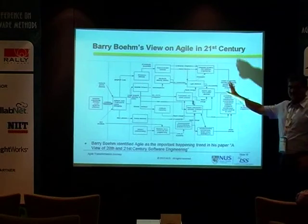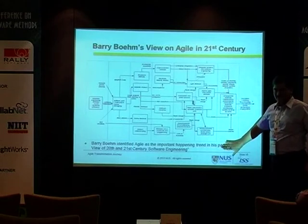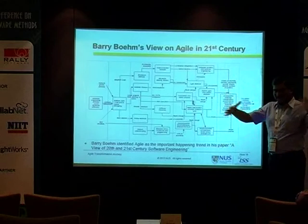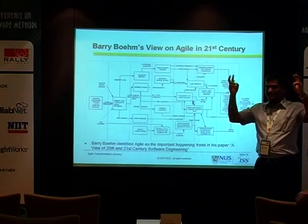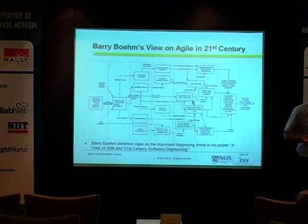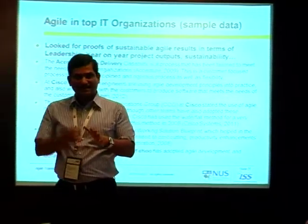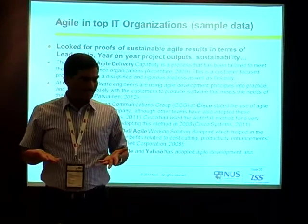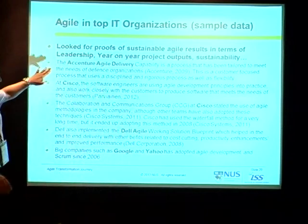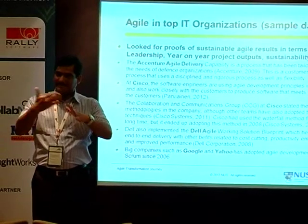We also consulted Barry Boehm, who in his work on 21st-century software engineering trends said Agile is going to be at the center of everything. So we are building the background: the best people like Barry Boehm say Agile is going to happen, the Gartner Hype Cycle says Agile is the way, and Dave Snowden endorses it. We also studied around 30 top organizations — Accenture, Cisco, Dell, Google, Yahoo — and found they are really reaping benefits from implementing Agile.